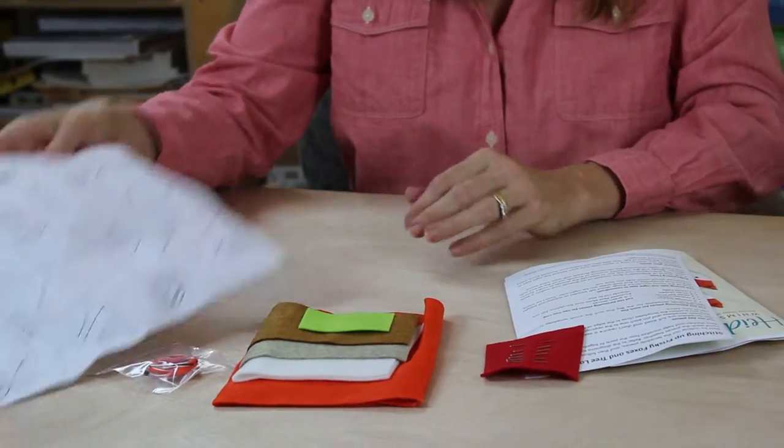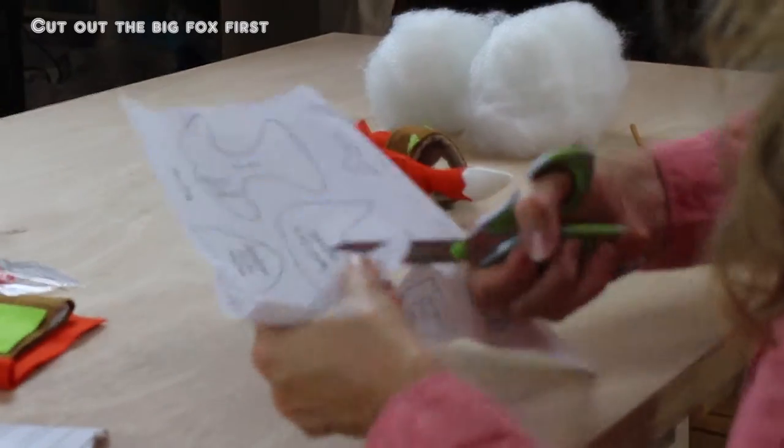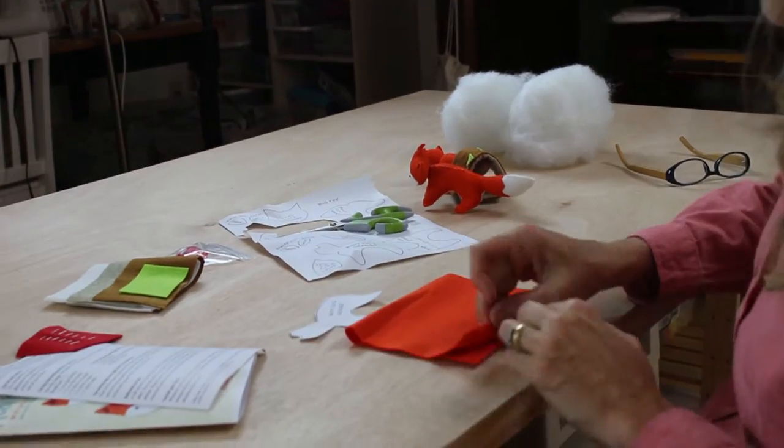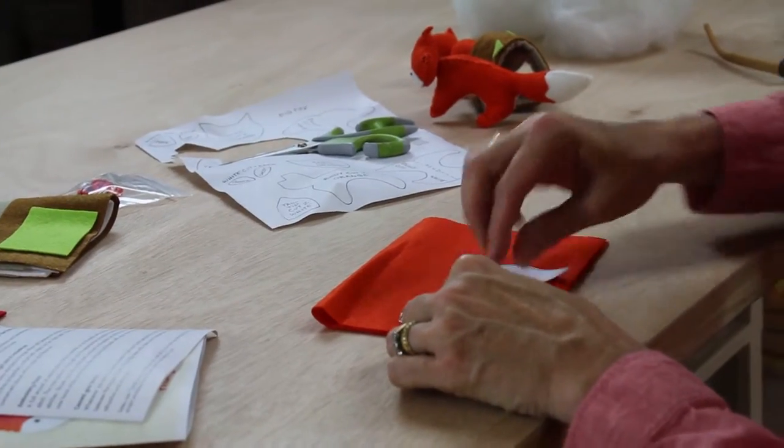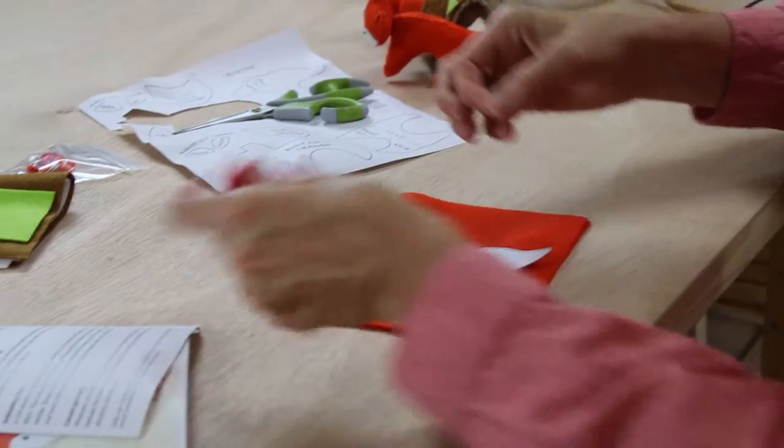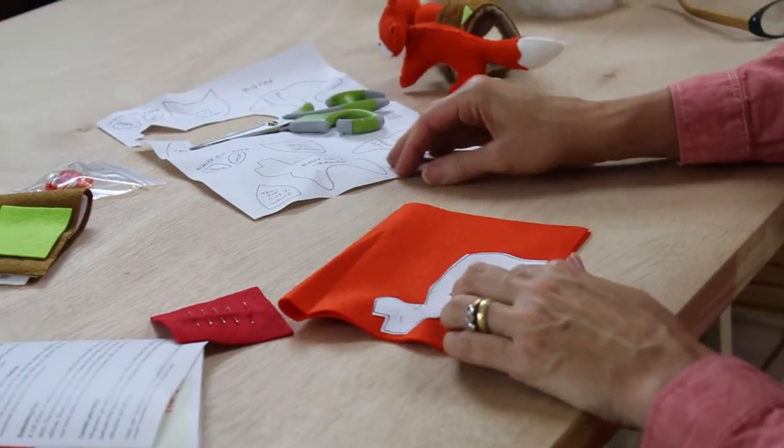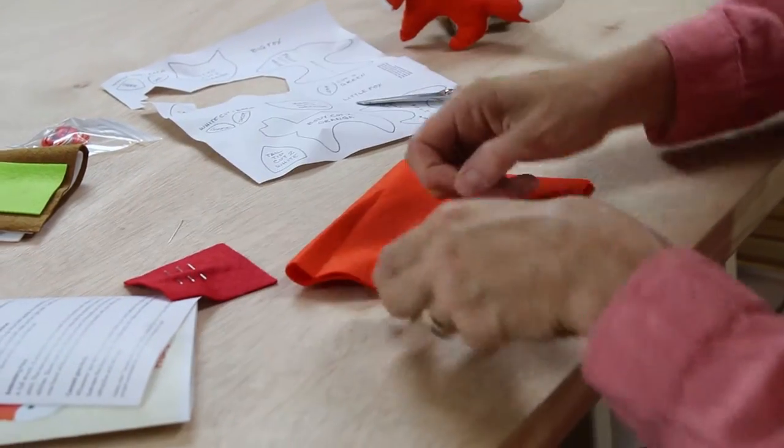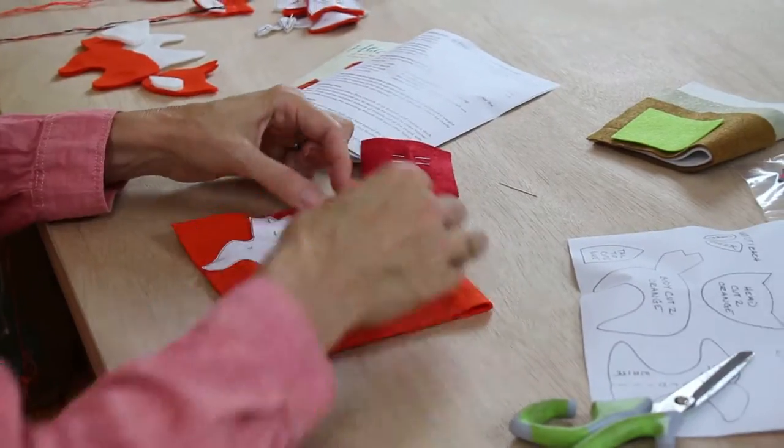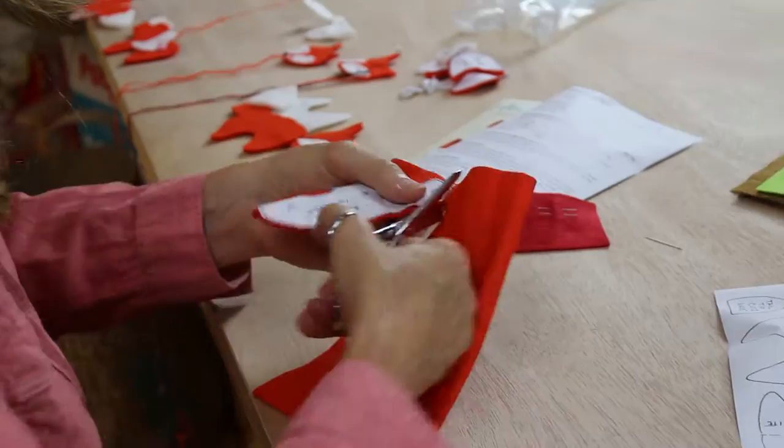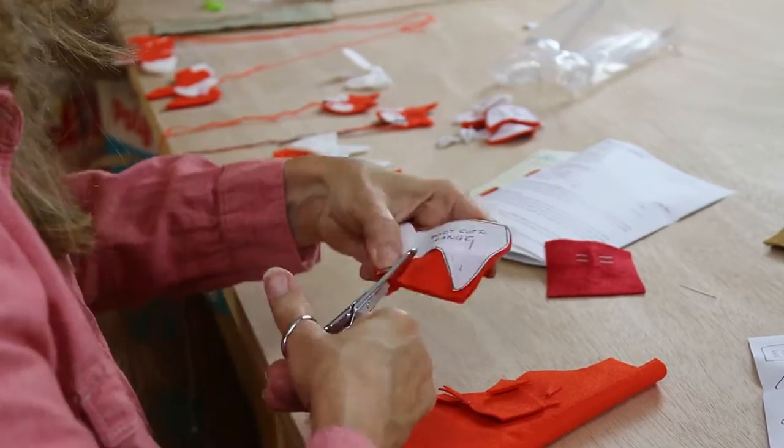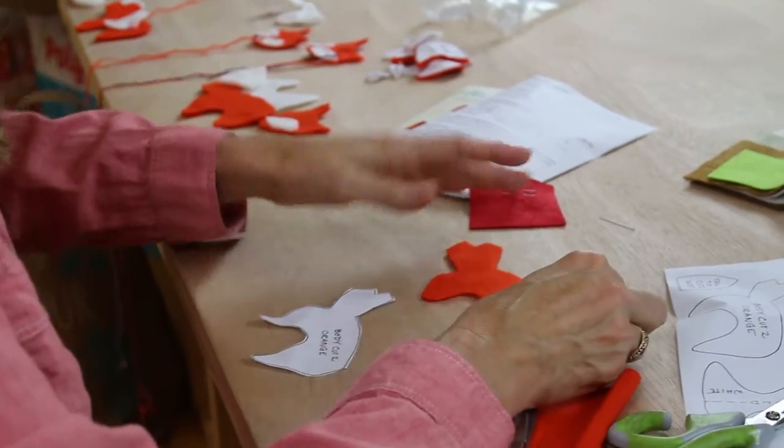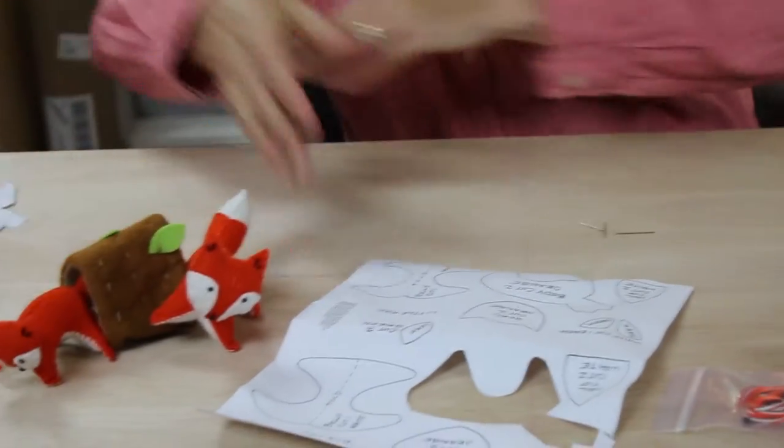So let's go through the first step, cutting out your pattern pieces. I'm going to show you how to put him on the felt. I'm going to leave the felt folded because we need two body pieces. I'm going to place it right along the edge so I'm using all of the felt because I'm going to need to get in the other body piece and the heads. What I'm doing is pinning this in place so it doesn't move while I'm cutting it.